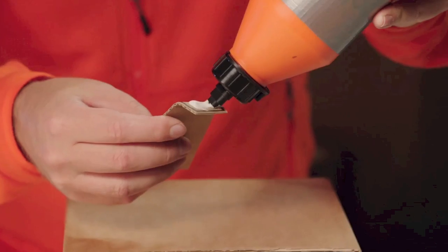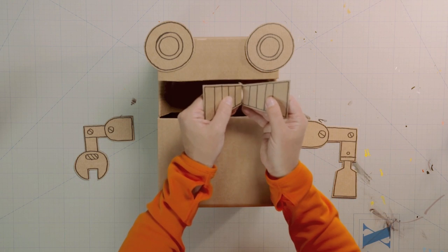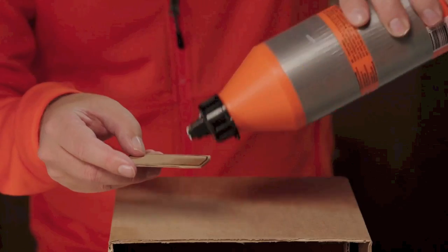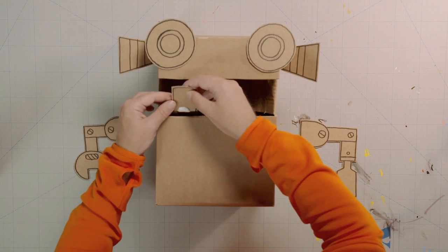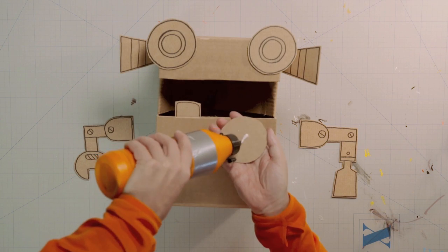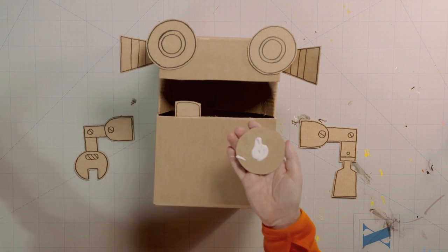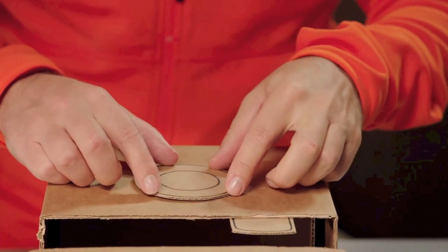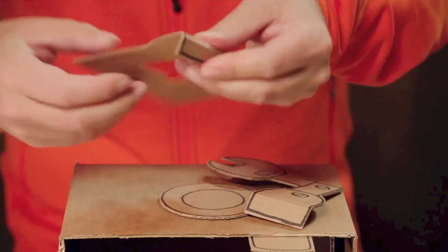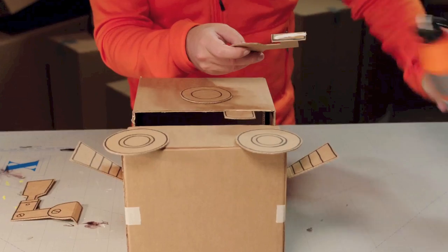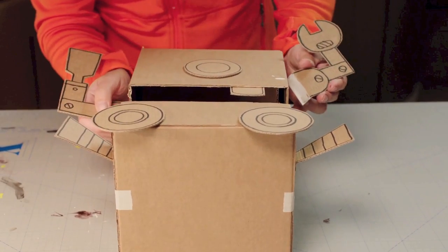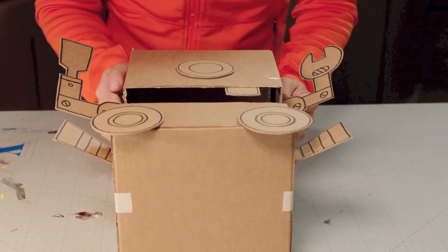Dab some glue on and stick the ears on each side. Glue on the tooth and the speaker on the middle of the chest. The arms also need a fold before you glue them on. If the parts don't stick straight away, either press them on firmly for a bit, or hold them down with some sticky tape until the glue dries.